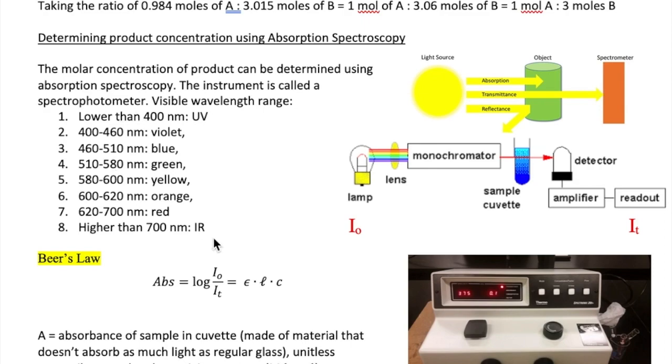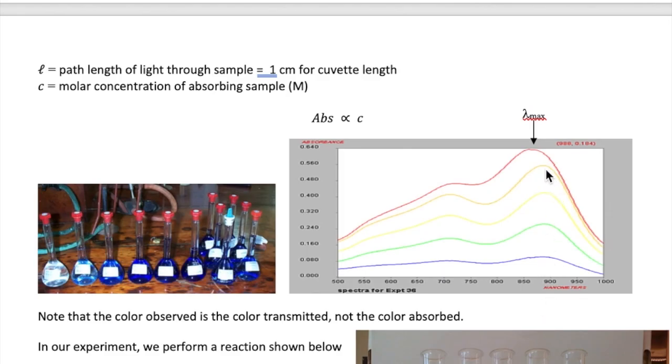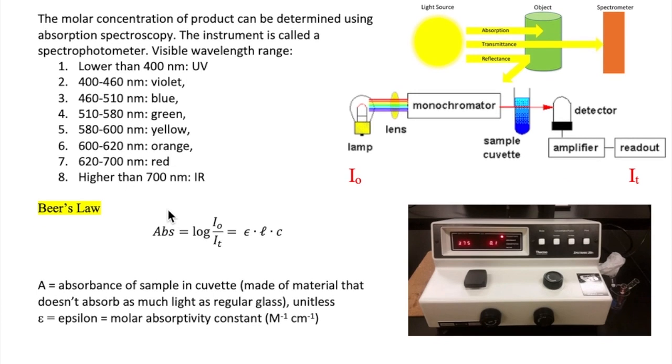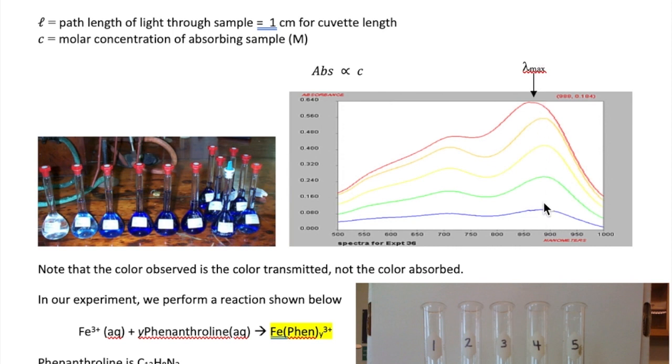So here I'm showing you a range of different wavelengths for different colors in the visible light spectrum. Since our sample only absorbs in the 900 nanometer range, which corresponds roughly to the infrared and the red region of the visible light,